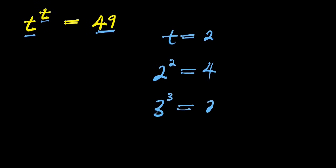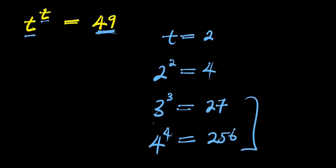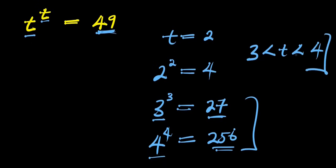3 to the power of 3 equals 27, which is still not 49. If we consider 4, we have 4 to the power of 4, which equals 256 — obviously greater than 49. So we can see that 3^3 = 27 is less than 49, and 4^4 = 256 is greater than 49. Therefore the range of values of t is 3 < t < 4.